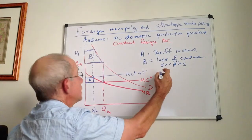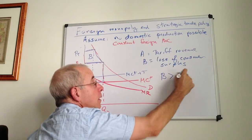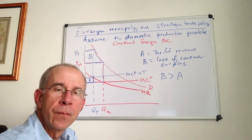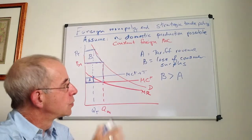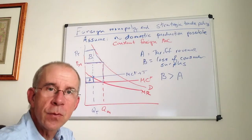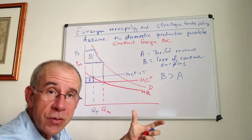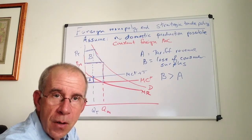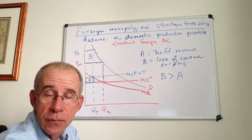In this case, the consumer surplus loss is greater than any gain the government might get in increased revenue from the foreign monopolist. We have the same policy as with linear demand, but very different results. With this type of demand structure, it does not make sense to impose the tariff on the foreign monopolist like it did with the linear demand curve.